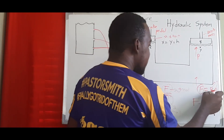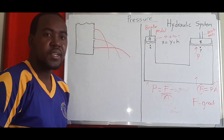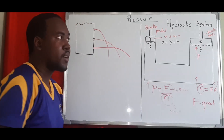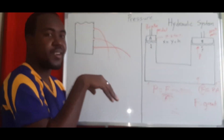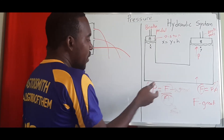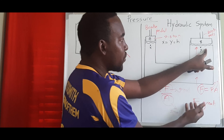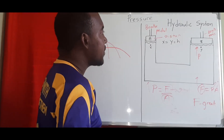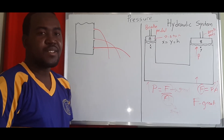Since force is proportional to both pressure and area, whatever happens to those values affects the output force. That's why if you barely step on the brake at high speed, the small force creates small pressure, which generates only a small clamping force on the brake pads. That's how the hydraulic system works. I hope you understand pressure in solids and liquids today — see you next time!